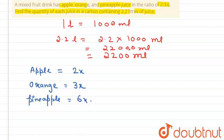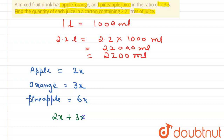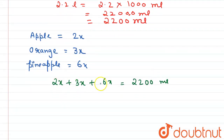It is given that each carton contains 2.2 liters of juice. The sum of total quantity — that is apple plus orange plus pineapple — equals the total in one carton. So we write: 2x plus 3x plus 6x equals 2200 mL.